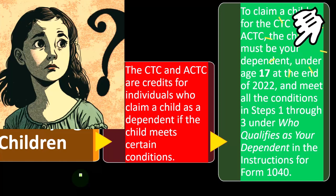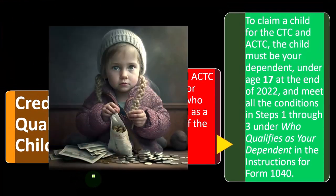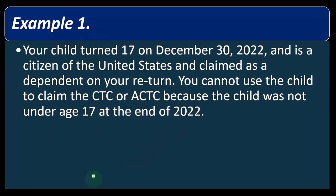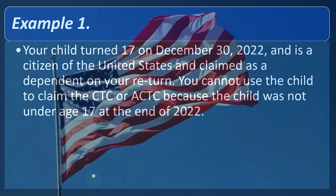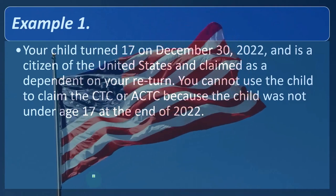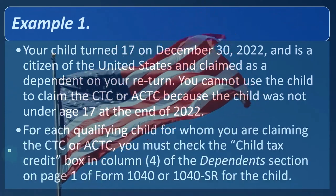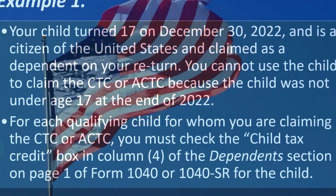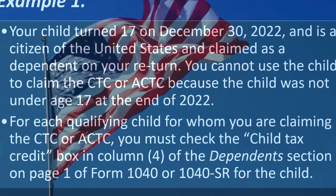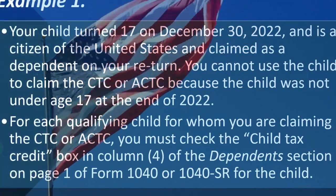To claim a child for the CTC and ACTC, the child must be your dependent, under age 17 at the end of 2022, and meet all the conditions in steps one through three of who qualifies as your dependent in the instructions for Form 1040. For example, if your child turns 17 on December 30th, 2022, is a U.S. citizen, and is claimed as a dependent on your return, you cannot claim the CTC or ACTC because the child was not under age 17 at the end of 2022. For each qualifying child, you must check the 'child tax credit' box in column four of the dependents section on page one of Form 1040.